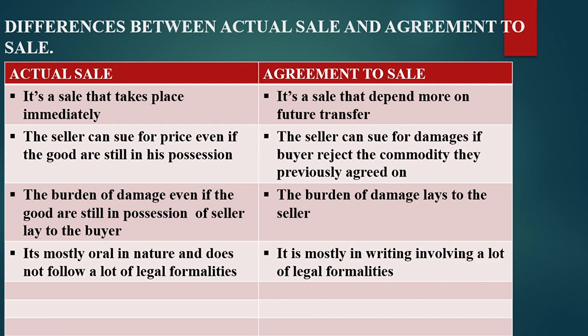For instance, if you purchase a phone from a mobile dealer but fail to take the phone immediately — since it is an actual sale — and the phone gets damaged while still in the seller's possession, the damage will lie with the buyer. In an agreement to sale, if there was an error experienced when processing a logbook, the cost of that error will lie with the seller.